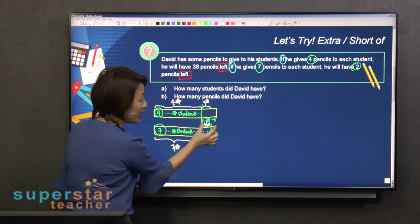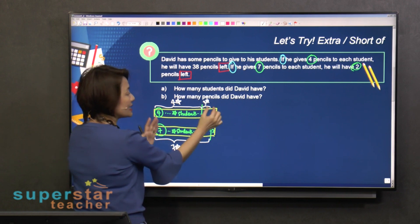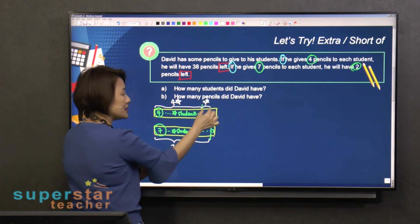Because 38 minus 2 is 36, and then seven star minus four star is three star. So actually, three star equals to 36.